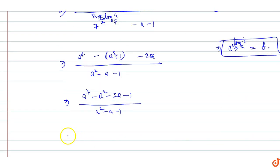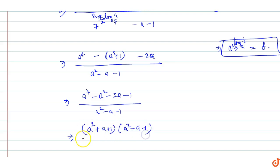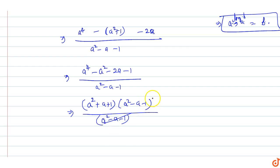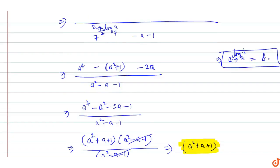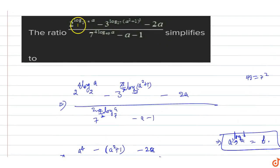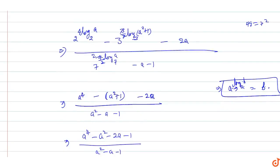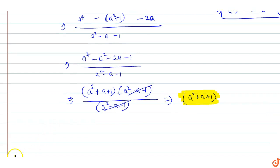Now the numerator is a fourth power polynomial which factors as (a squared plus a plus 1) into (a squared minus a minus 1). This is upon (a squared minus a minus 1), so a squared minus a minus 1 cancels out, leaving a squared plus a plus 1. So the ratio simplifies to a squared plus a plus 1. This is the answer.